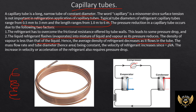Due to the resistance of the capillary tube, the flow of refrigerant is reduced. A small, controlled amount of refrigerant passes through, absorbs heat in the evaporator, and the liquid refrigerant is converted to vapor before going to the compressor.